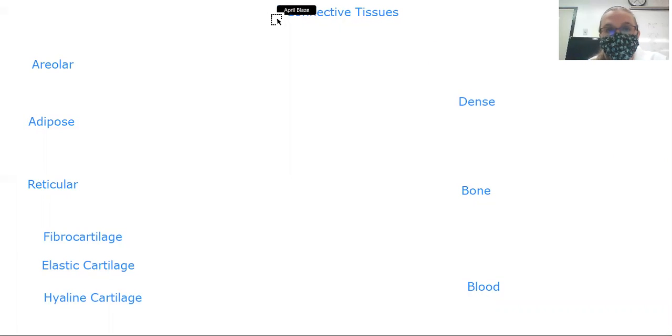All right. So in the previous videos, we looked at the four main tissue types all together and how they were different in structure and function. And then we looked at just the epithelial tissue types. And now we're going to look at just the connective tissue types.